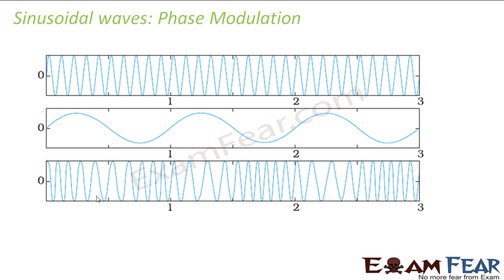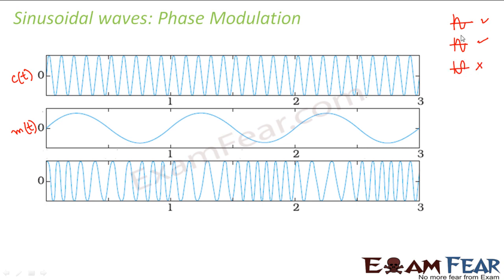On a similar ground, we can talk about phase modulation. Here again you have the high frequency carrier wave and the low frequency message signal. The result looks similar to frequency modulation, but it is not the same. How do you understand phase modulation? If one wave and another wave are aligned, we say they are in the same phase. If another wave is shifted, we say they are not in phase.